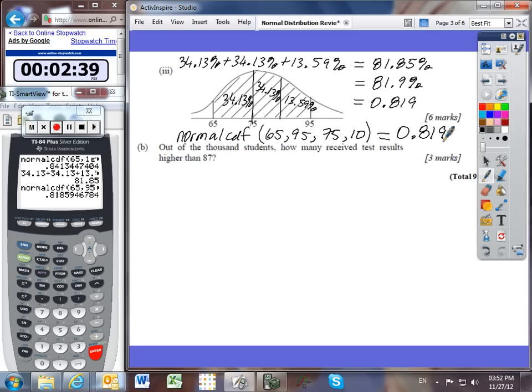Out of the 1,000 students, how many received test results higher than 87? So now on your normal distribution curve which has a mean at 75, we're now looking for the amount that got higher than 87.